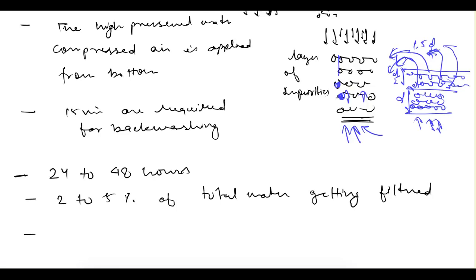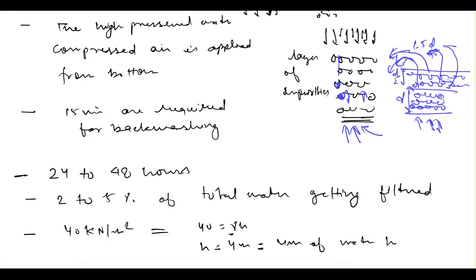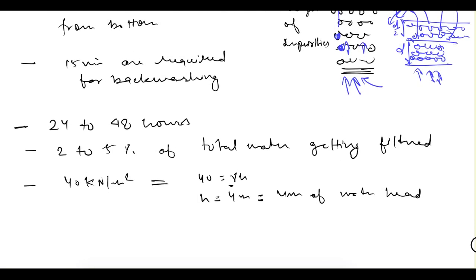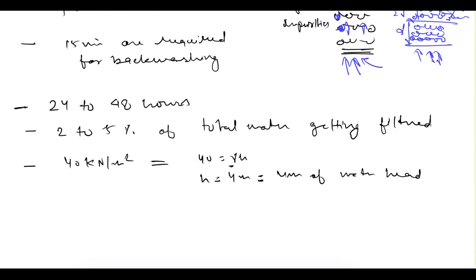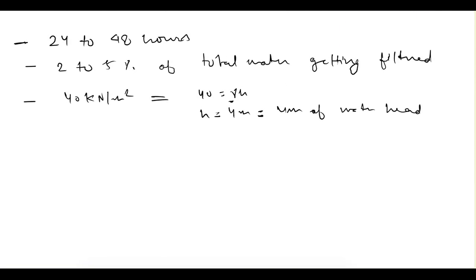The pressure used for back washing is 40 kilonewtons per meter square. Converting this to head: using p equals gamma times h with unit weight of water as 10, h equals 4 meters. So that is equivalent to 4 meters of water head, which is the pressure needed for back washing.